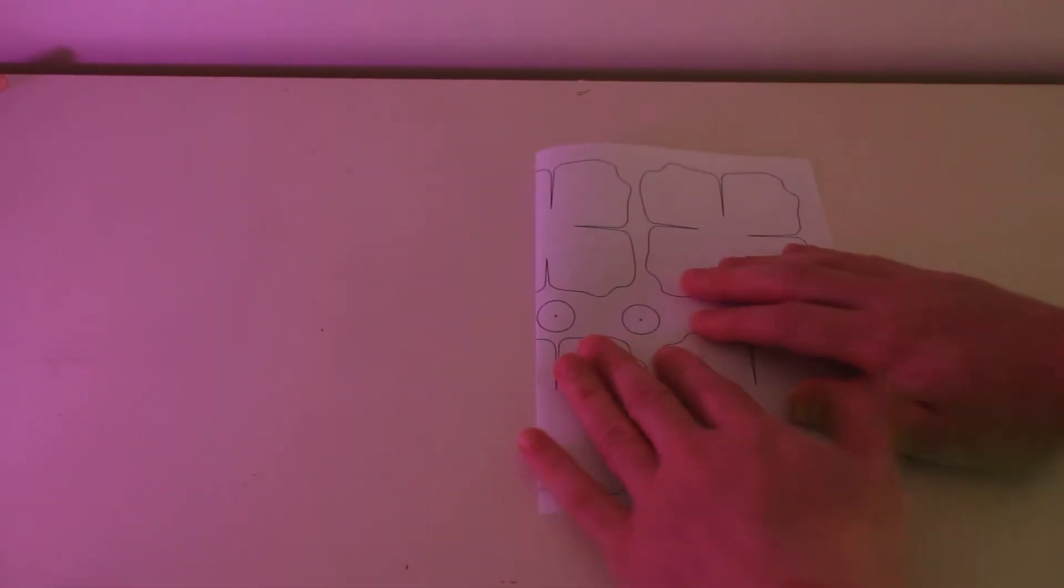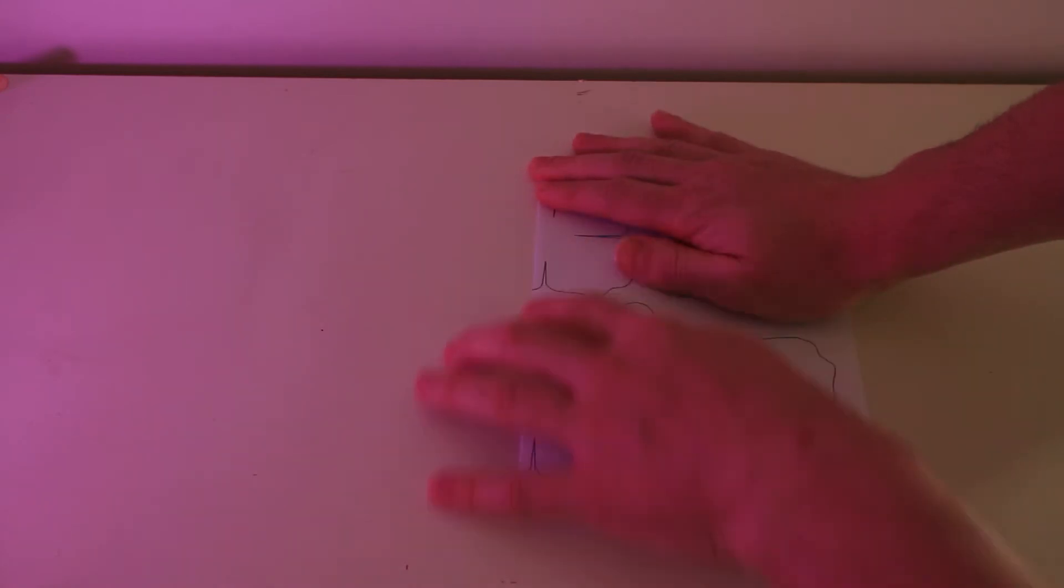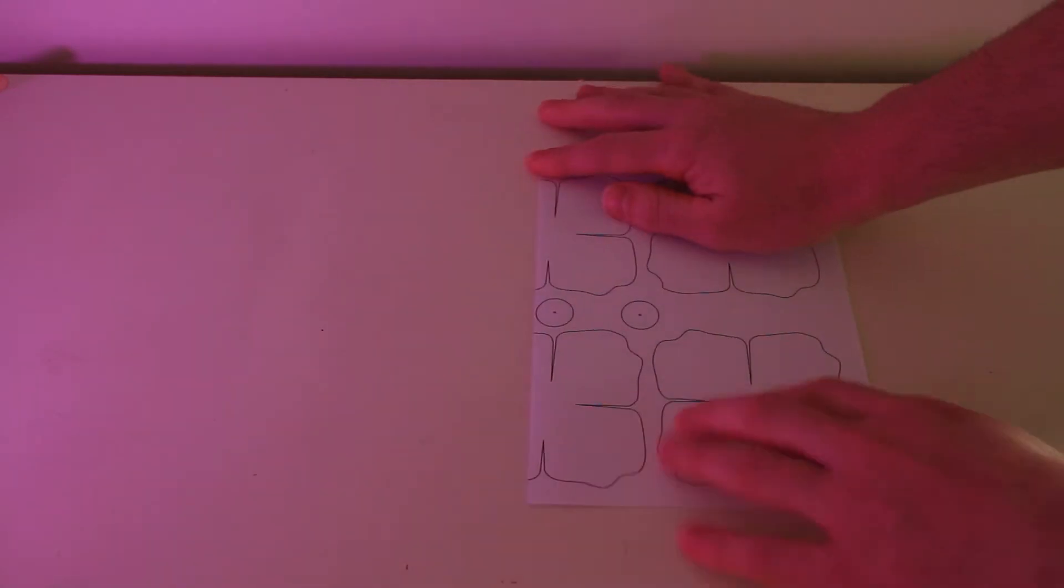Now that the fuselage is complete, it's time to make the wings. Fold an A4 piece of paper in half, and then get some scissors to cut it down the middle line.